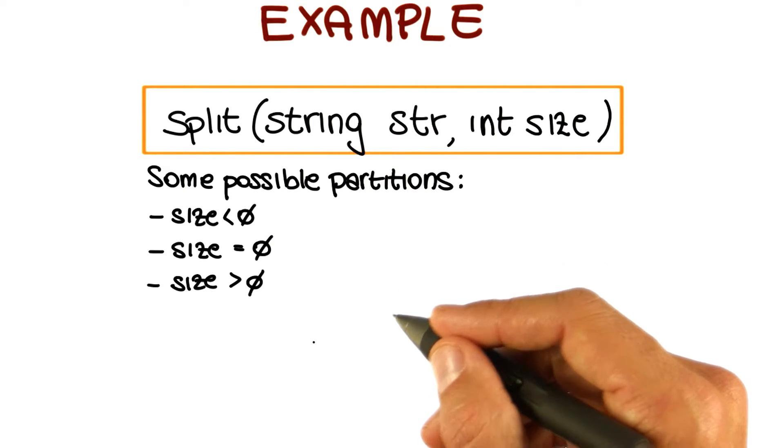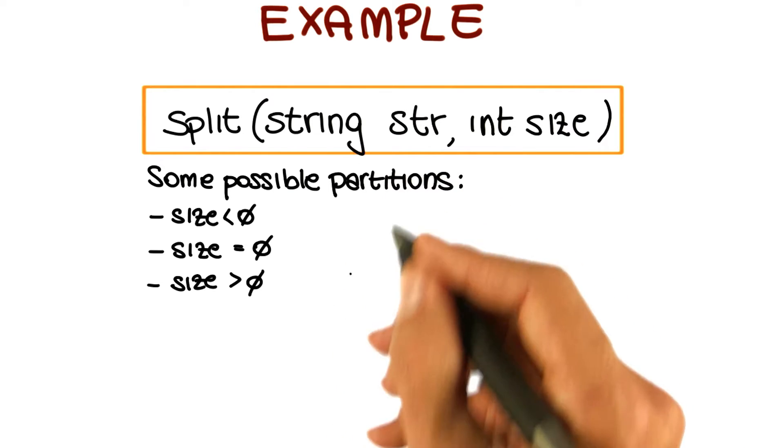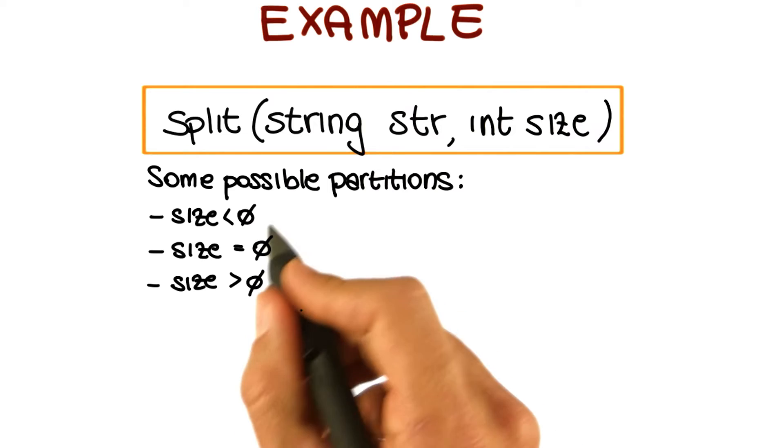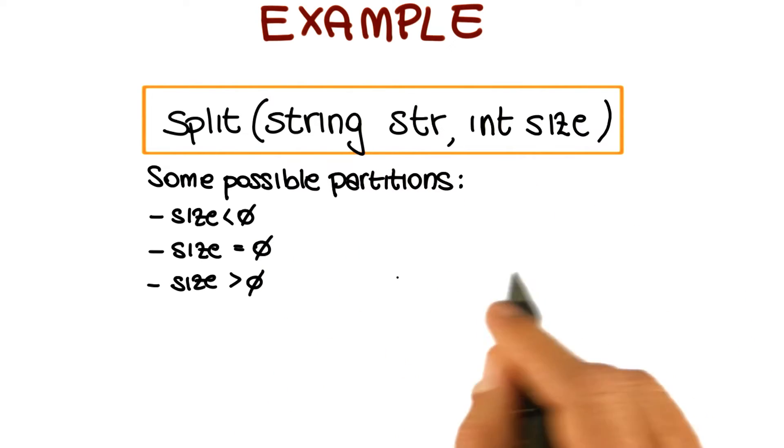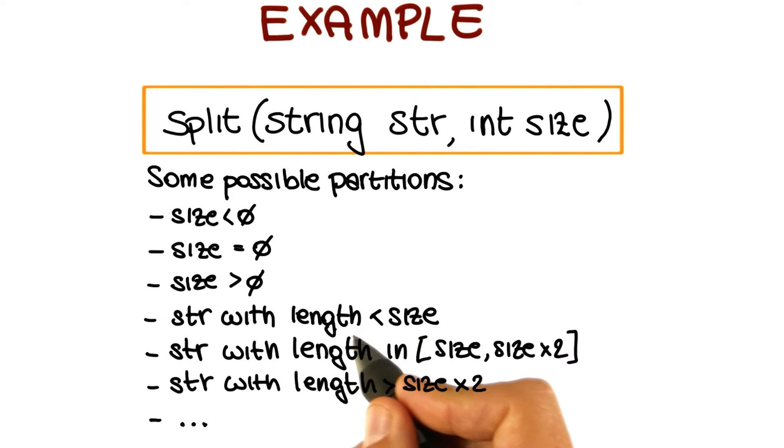So now let's look at string, str, and let's see what kind of subdomains we could identify for this parameter. Notice another important aspect here is that we treat each different part of the input independently, which also helps breaking down the problem. One interesting subdomain is the domain that includes all the strings whose length is less than size. So all the strings, they will not be split.